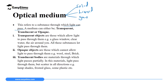All materials through which light can pass can be categorized into three: we have transparent optical medium, translucent optical medium, and finally we have opaque optical medium.